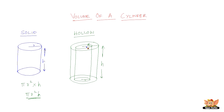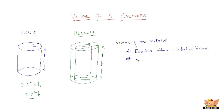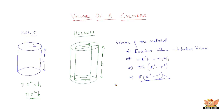That gives us the volume of the hollow cylinder. The volume of the hollow cylinder, or the volume of the material, is nothing but exterior volume minus the interior volume. So the exterior volume is pi capital R square h, and the interior volume is pi small r square h. So pi R square h minus pi r square h is nothing but pi h into capital R square minus small r square. This is usually written as pi into R square minus r square into h. So this is the volume of the hollow cylinder.